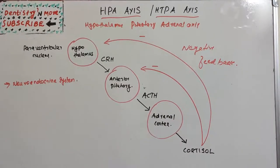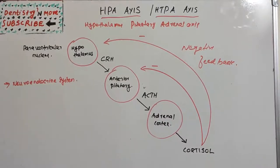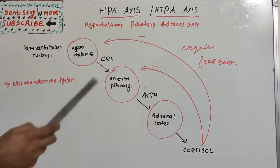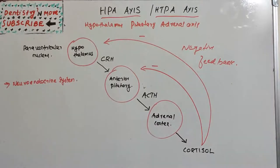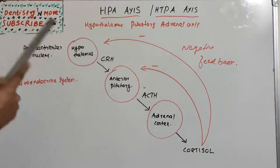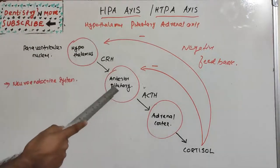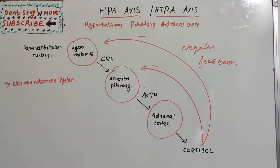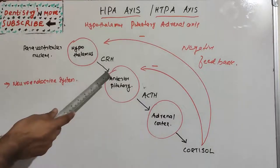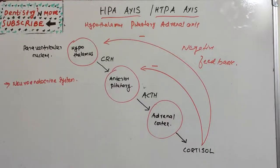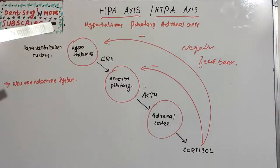It is a complex set of direct influences and feedback interactions among three components: the hypothalamus, the anterior pituitary, and the adrenal cortex. The hypothalamus is a structure in the brain. The anterior pituitary is a pea-shaped structure located below the thalamus. The adrenal glands are minor glands present above the kidneys.